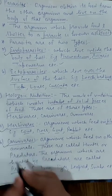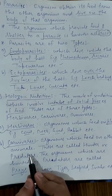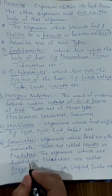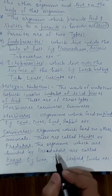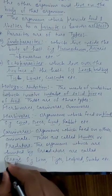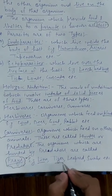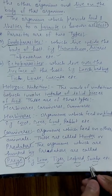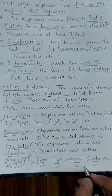The second type is carnivores — organisms which feed on other animals and eat the flesh or meat of other organisms. These are known as hunters or predators because they kill other organisms to make them their food. The organisms which are hunted by predators are called prey. These animals are exclusively carnivores.